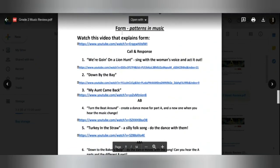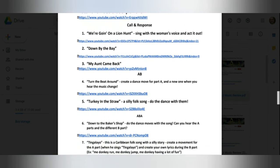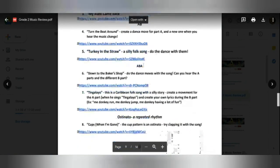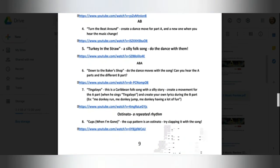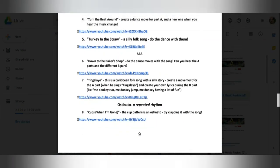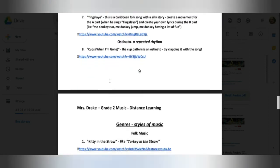And then we looked at form in music. So we did a lot of call and response songs. Down by the Bay is one of them. We did My Aunt Came Back. There's songs that are in different forms using letters like A-B or A-B-A. And we also learned what an ostinato was. An ostinato is a repeated pattern. Now, we didn't necessarily do all these songs for distance learning, but that's okay. You can go through and listen to them yourself.